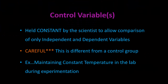Control variables are held constant by the scientist and allow comparison of only the independent and dependent variables. Be careful — control variables and control groups are two different things. An example of a control variable would be maintaining a constant temperature in the lab during an experiment, because you don't want temperature changes to affect what you're measuring.